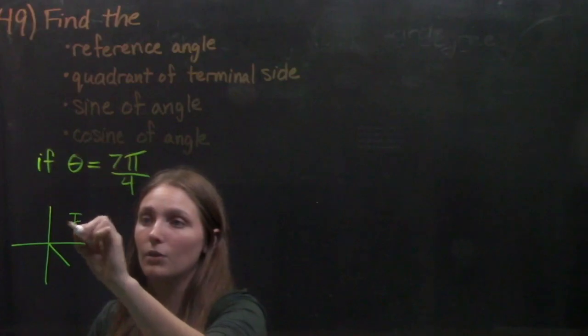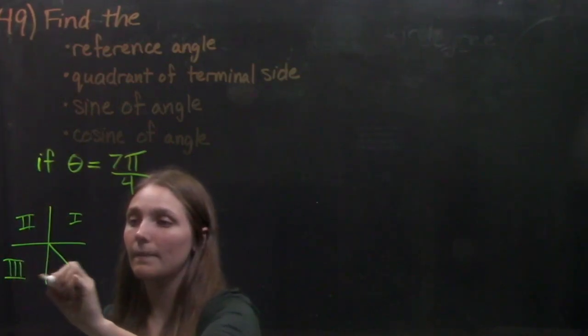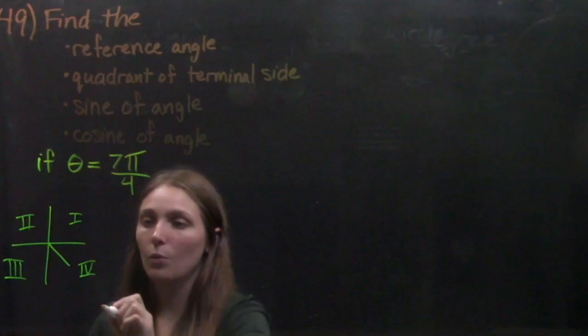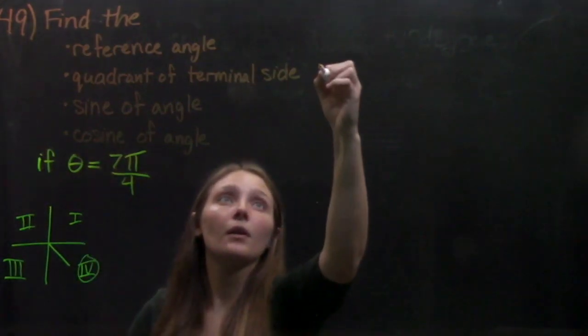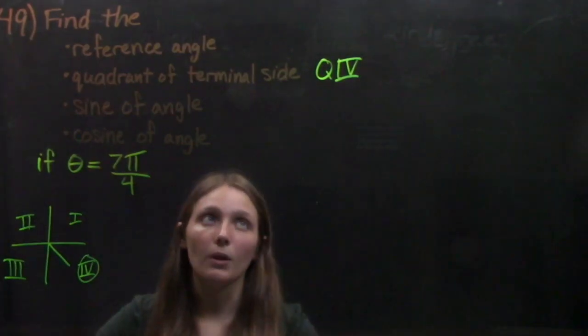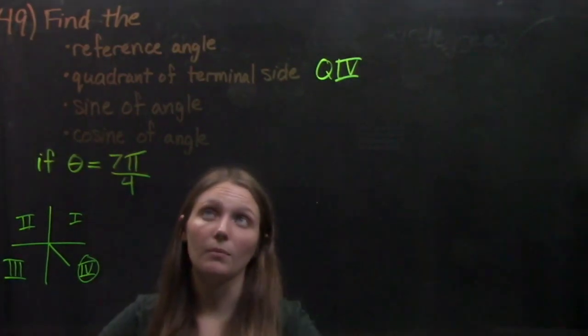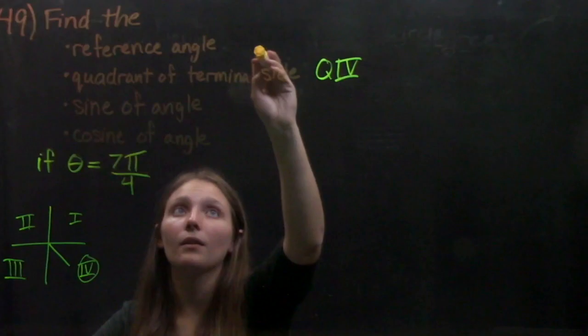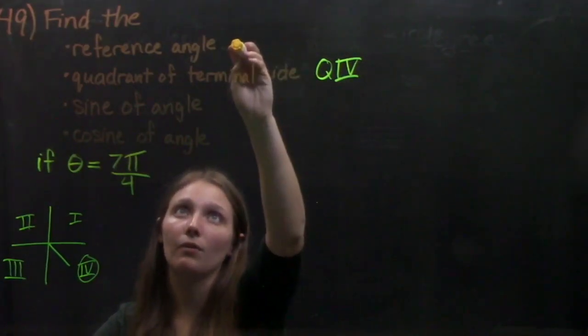And we've got quadrant 1, 2, 3, so that means we are in quadrant 4. So we've got the second part of the problem figured out. And now that we've got the quadrant, we can go ahead and find the reference angle.